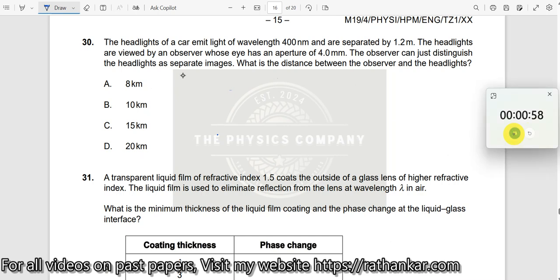Okay, question number 30. The headlights of a car emit light of wavelength Lambda is given to you and are separated by 1.2 meters. Let us visualize this to get a better answer.